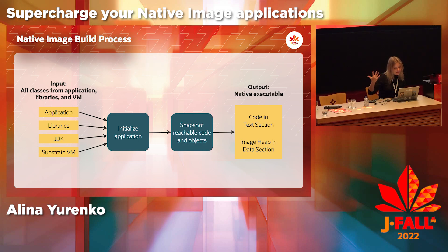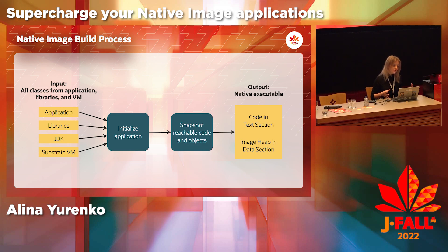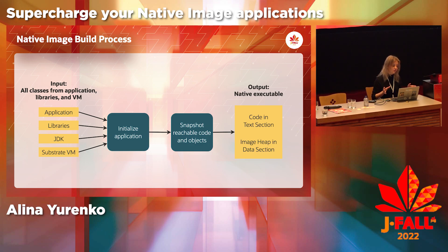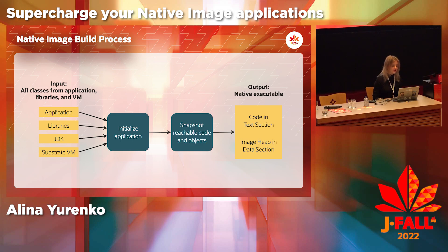When you run our native image tool and give it your Java application, it will start analyzing your application, trying to find all the reachable code — all the code necessary for your application to perform any functions it has. It will only include that code in the final produced executable. It will analyze your code, your dependencies, JDK classes you are using, and include only those things you are actually using. That is how native image makes the executable so slim and lightweight.